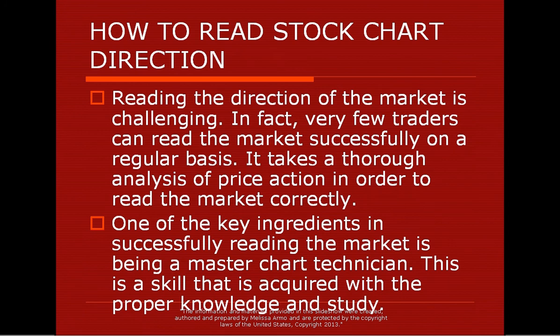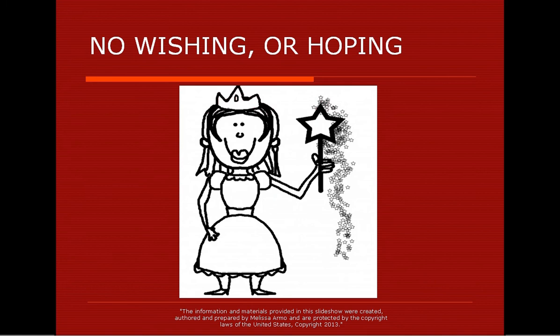They get into trades that are not good trades because they're in the wrong direction and therefore can't possibly make money. The way to make money is playing with the directional trend. So how do you read stock chart direction? Reading the direction of the market is challenging. In fact, very few traders can read the market successfully on a regular basis. It takes a thorough analysis of price action in order to read the market correctly. One of the key ingredients in successfully reading the market is being a master chart technician — this is a skill that is acquired with the proper knowledge and study. It is possible for you to start reading trends correctly, but you have to have the right information.